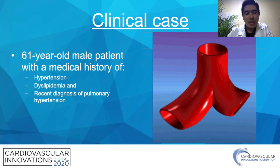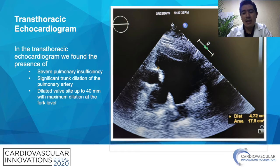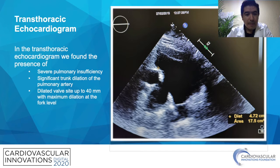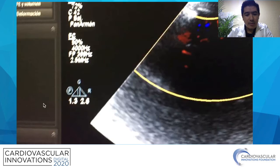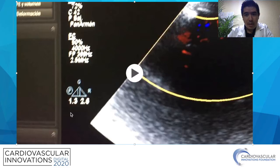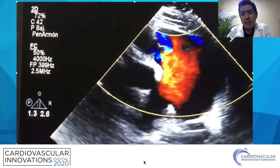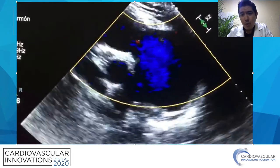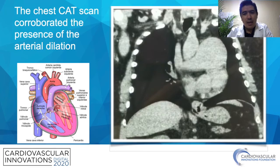During our patient's hospitalization, the cardiology department performed a transthoracic echocardiogram, where severe pulmonary valve insufficiency was identified. The pulmonary valve measured 40 mm in diameter, with significant dilatation of the pulmonary trunk, as can be seen in this image. In this video of the echocardiogram, we can see the turbulence detected when applying color transthoracic Doppler at the level of the pulmonary valve, with approximately 40 mm, as previously commented.